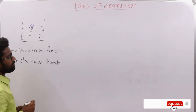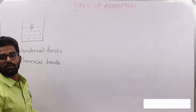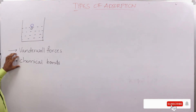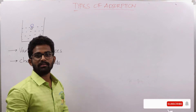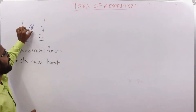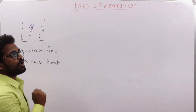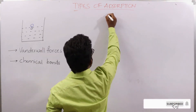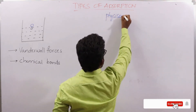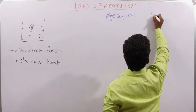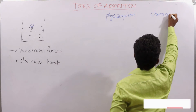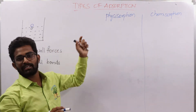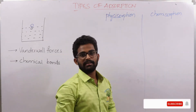These are the two types of intermolecular forces occurring between the molecule of adsorbent and the molecule of adsorbate — van der Waals forces and chemical bond. Based on the type of bond formed, this adsorption process is mainly divided into two types: physisorption and chemisorption.